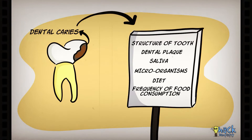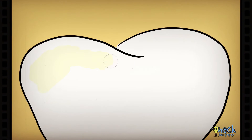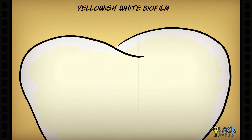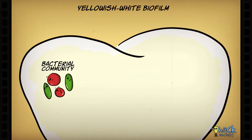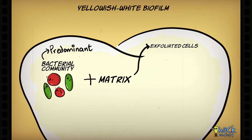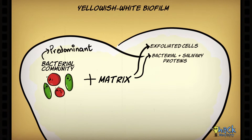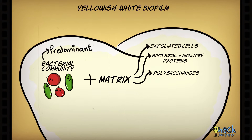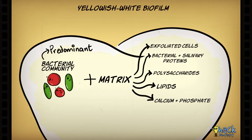A significant factor influencing the formation of dental caries is dental plaque. Dental plaque is a yellowish-white deposit or biofilm that forms on the teeth and other hard structures in the oral cavity. It comprises predominantly of bacterial communities in a matrix of exfoliated epithelial cells, bacterial and salivary proteins. The matrix may also harbor carbohydrates like glucans, fructans and other polysaccharides synthesized by bacteria, lipid material and inorganic constituents like calcium and phosphate.